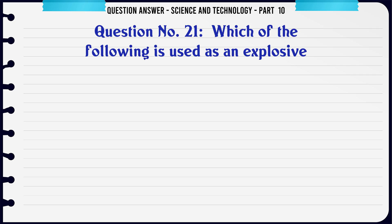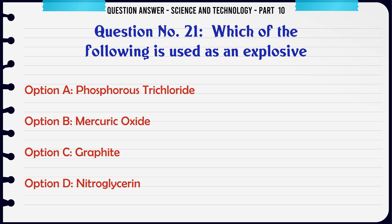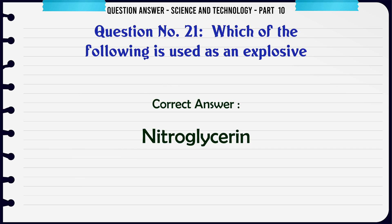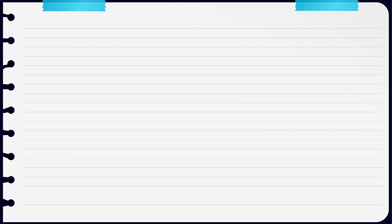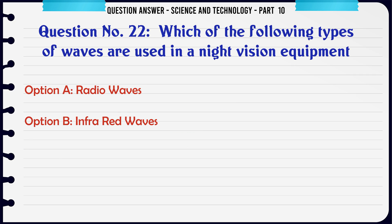Which of the following is used as an explosive? A. Phosphorus trichloride. B. Mercuric oxide. C. Graphite. D. Nitroglycerin. The correct answer is Nitroglycerin.